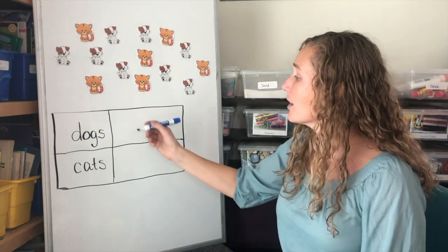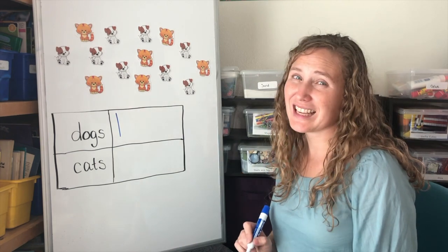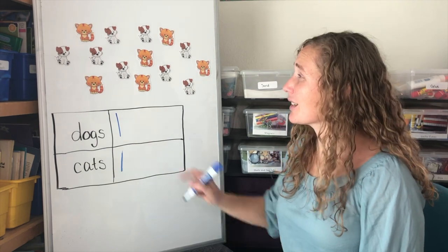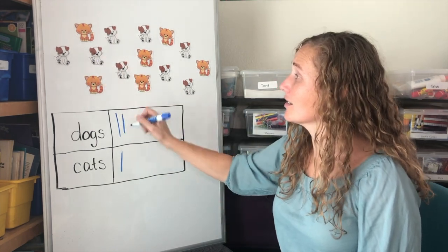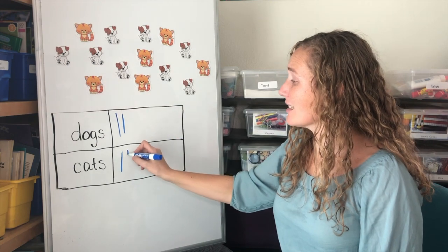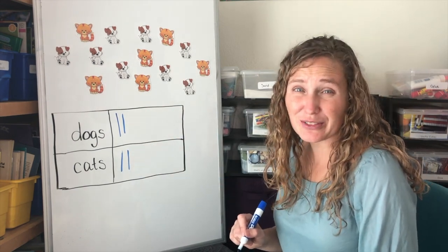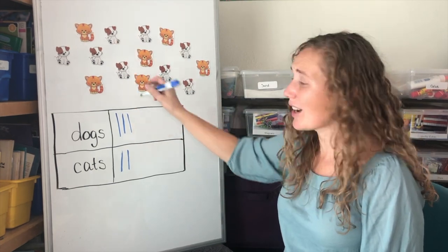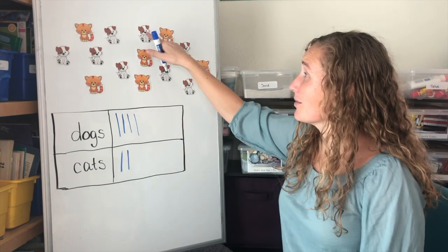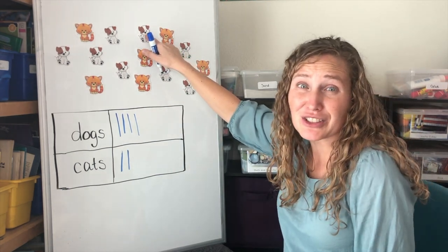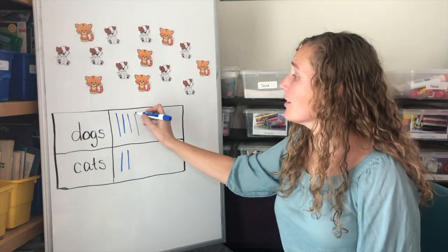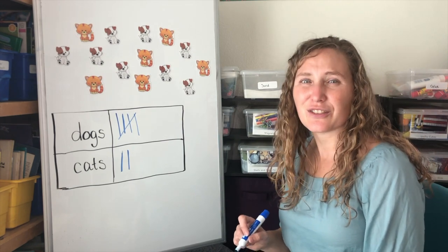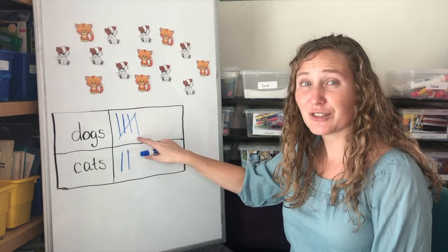We have one dog, one Tally Mark, a cat, one Tally Mark, another dog, another cat. Now we have counted two of each. Another dog, another dog, another dog. Back up at the top, we have another dog. When we get to five, we make a slash across. That makes it easy for us to know that we've counted five dogs so far.